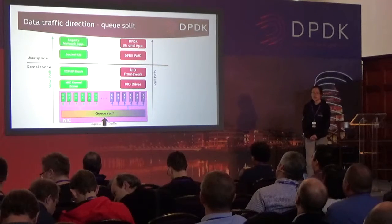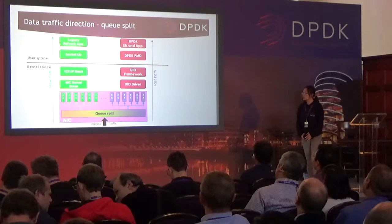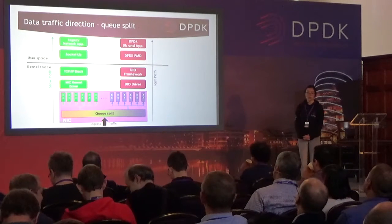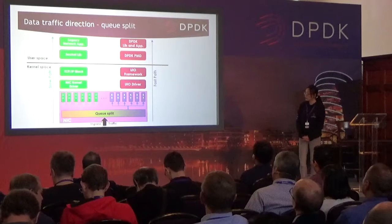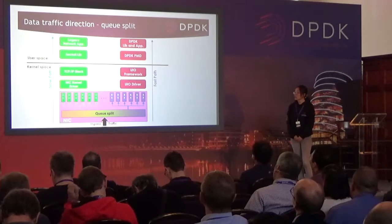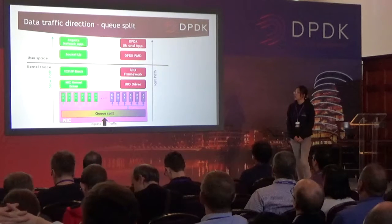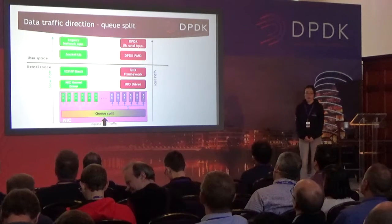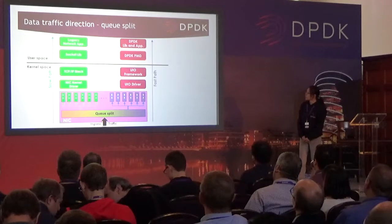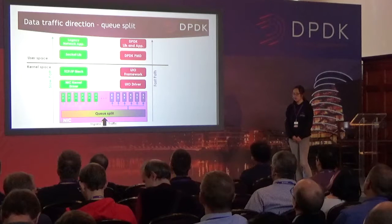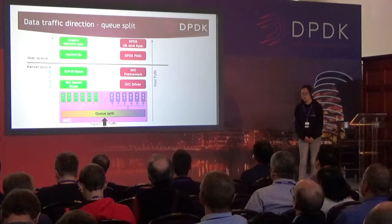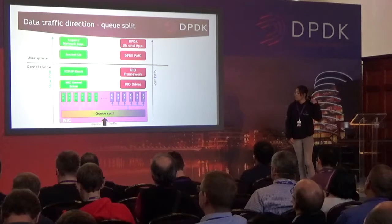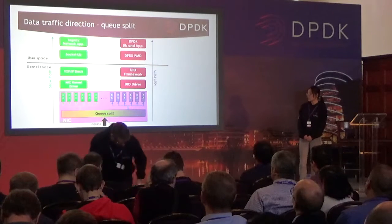This slide shows the idea of how we achieve bifurcation. We use the NIC's hardware features to achieve queue split. The queues in green are handled by the kernel driver, and the queues in purple are handled by DPDK. You know that DPDK polling drivers handle mbuf and memory, but the kernel driver handles memory allocated by kernel space for DMA.